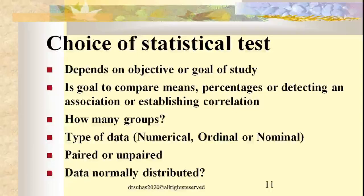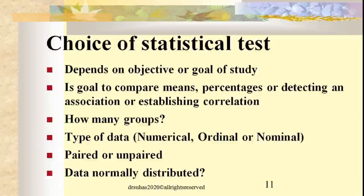Most importantly, whether the data is normally distributed is a basic factor for selecting between parametric and non-parametric tests. When normally distributed, select the parametric test; when not, select non-parametric. In most scenarios the choice is clear, but when in doubt between parametric and non-parametric, it is always better to go with the parametric test because parametric tests are considered more powerful than non-parametric, though non-parametric tests are robust.